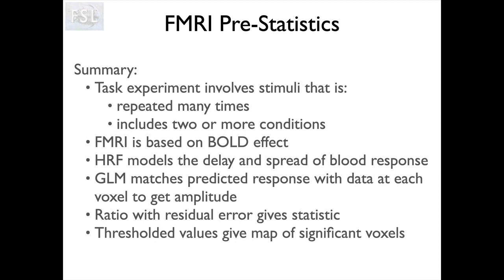In summary, our task fMRI experiment involves stimuli that need to be repeated many times to build up statistical power and include at least two conditions, though many more are possible. We have to have at least two in order to see changes, which is the only thing we can actually detect. fMRI is based on the BOLD effect, which is about blood flow, and we have an HRF — a hemodynamic response function — which models the delay and spread of that blood response. We use that to get a predicted response, which we use in a general linear model to match with the data and fit an amplitude. That gives us a statistic value when we take the ratio with the residual noise. We then threshold those values to create a map of statistically significant voxels. The next thing we need to look at is how we do the pre-processing to get rid of as many structured signals as possible that are not related to neuronal activation or straightforward white noise.